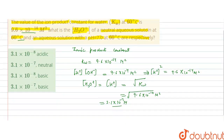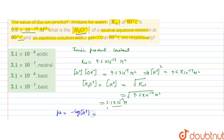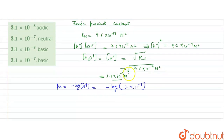Now we need to find the pH of the neutral solution. pH equals minus log of H⁺ concentration, which is minus log of 3.1 into 10 to the power minus 7. This gives us 7 minus log 3.1, which equals 6.51.